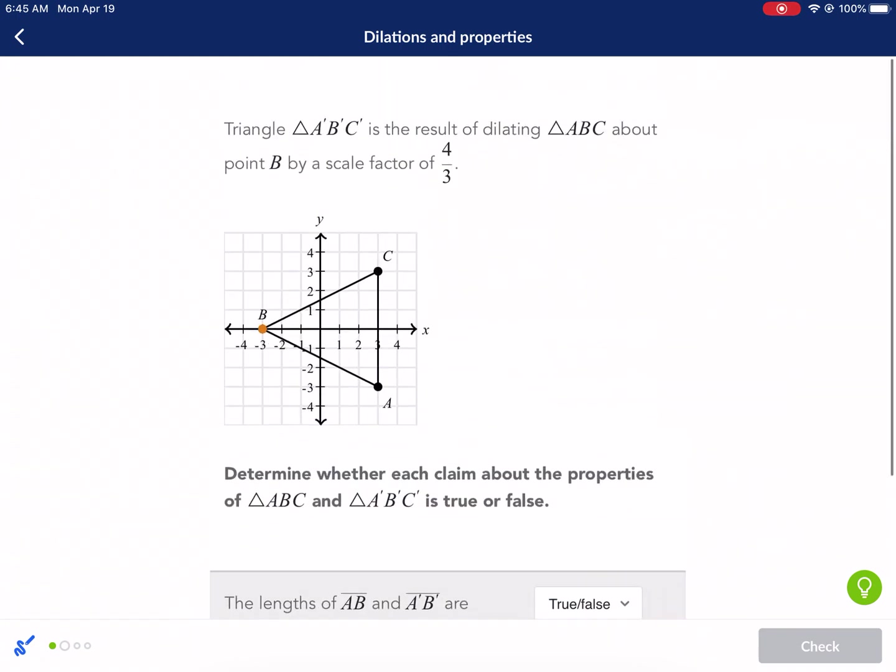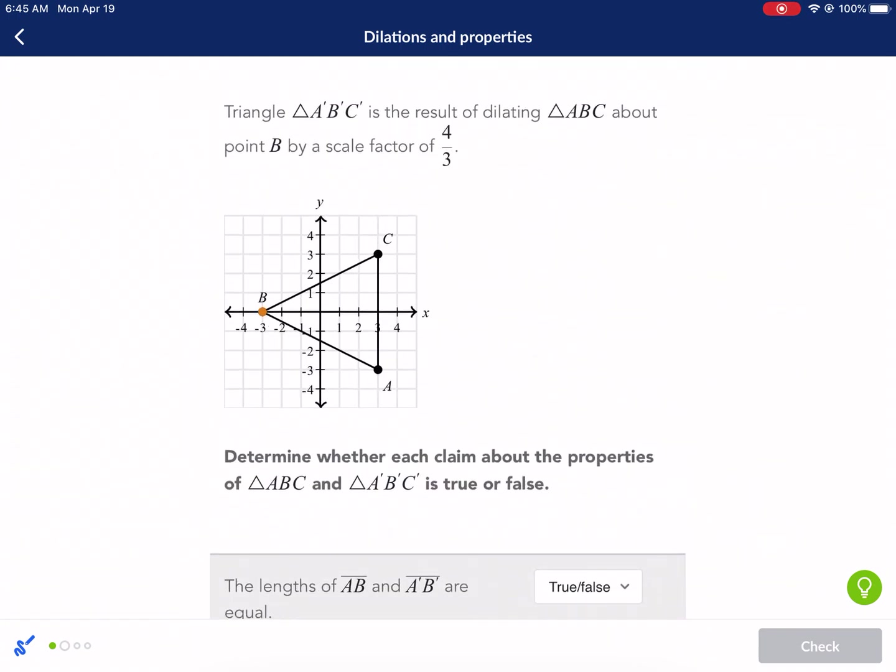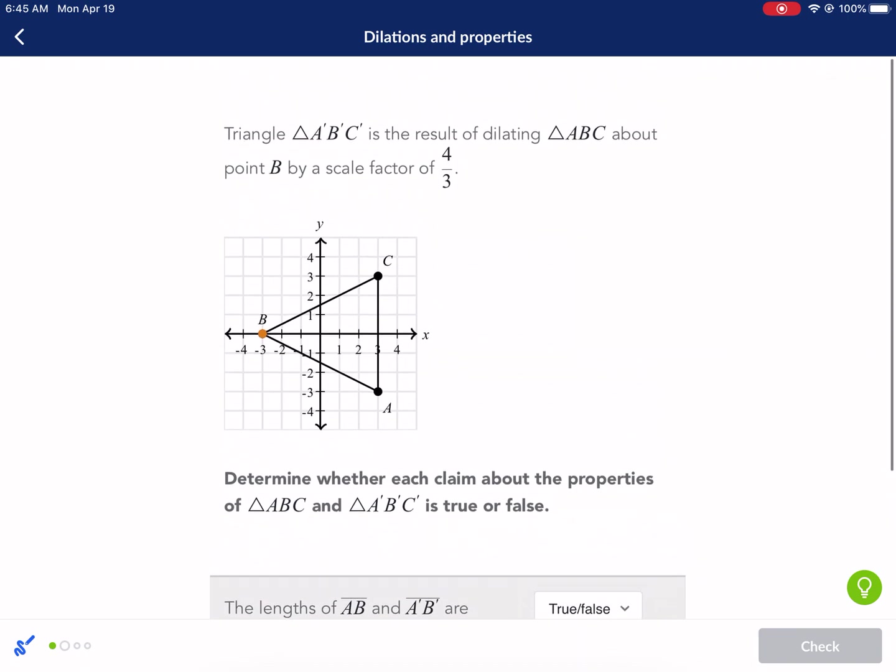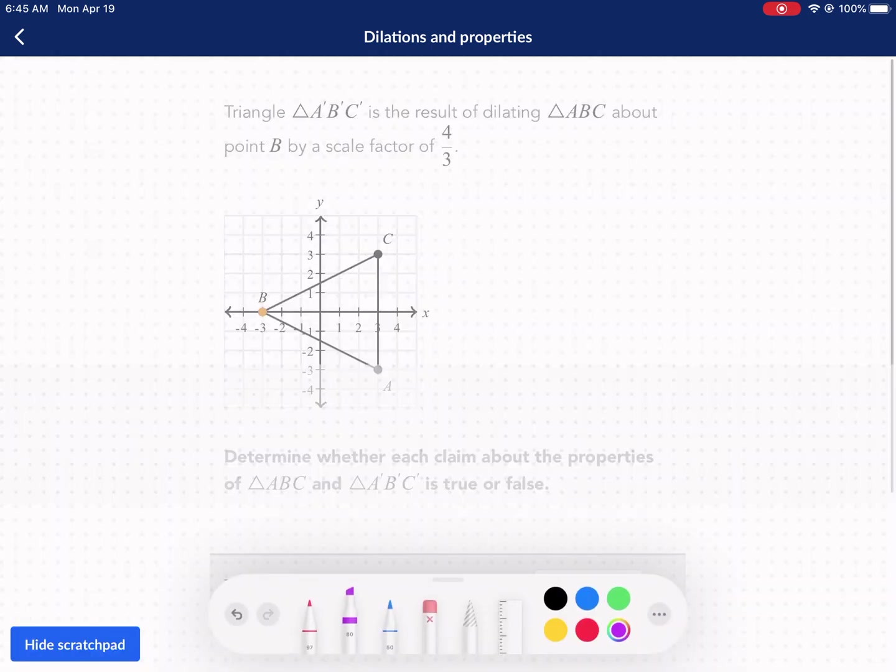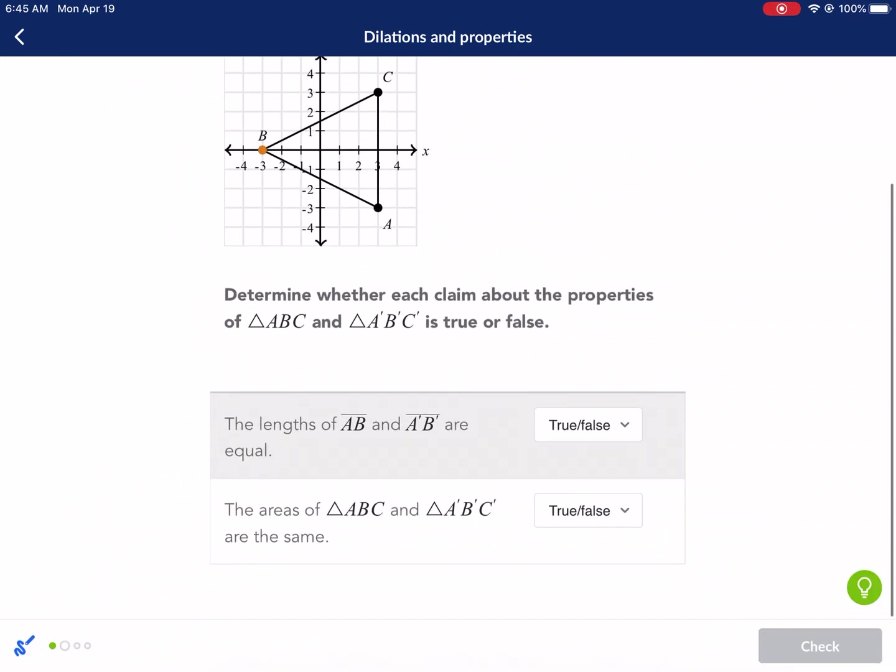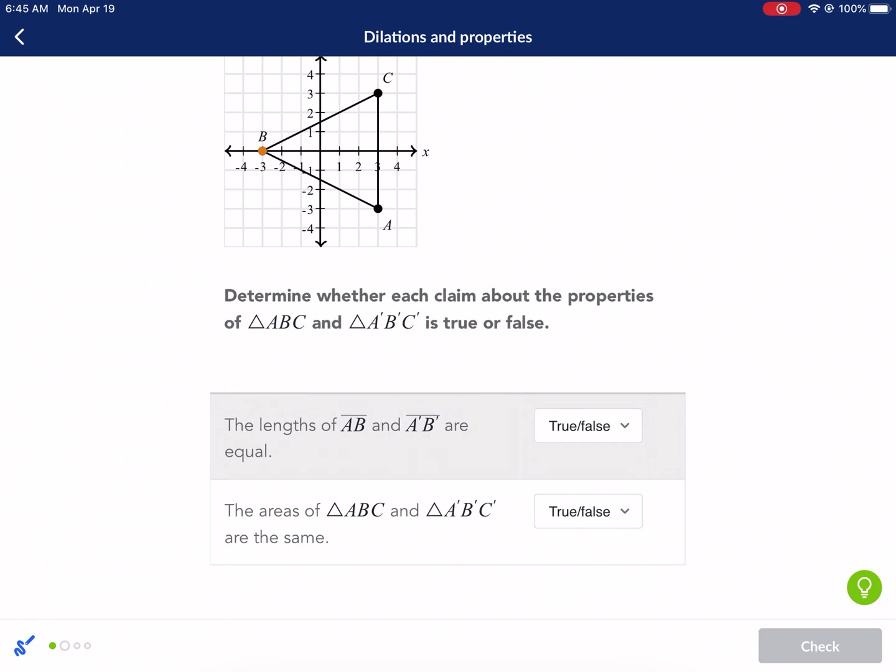Next question. Here we have triangle ABC prime is the result of dilating ABC about point B by a scale factor of 4 over 3, so about 1.3 times bigger. This is equivalent to 1.3 repeating, so we multiply all the sides. The scale factor is 1.3 repeating, and that's how much bigger it's going to be.